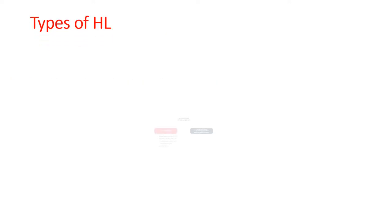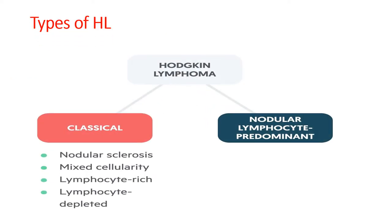There are two types of Hodgkin's lymphoma: nodular lymphocyte-predominant lymphoma and classical Hodgkin's lymphoma. The classical type is further subclassified into nodular sclerosis, mixed cellularity, lymphocyte-rich, and lymphocyte-depleted.